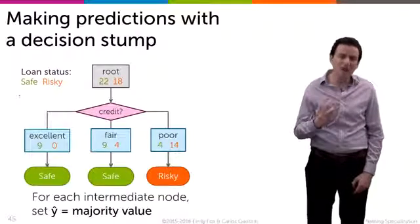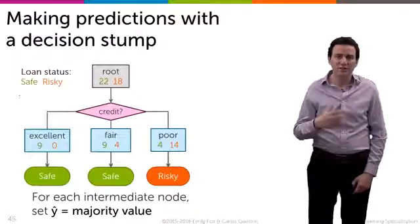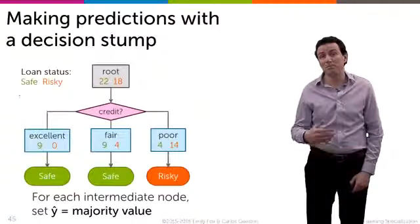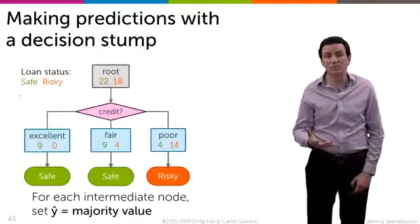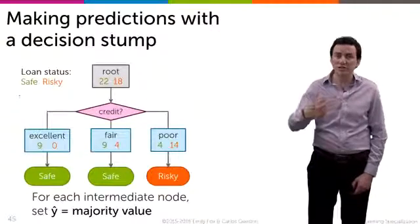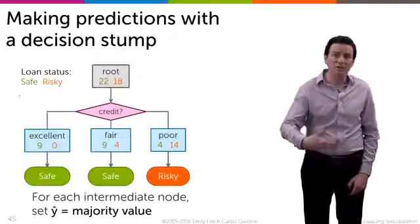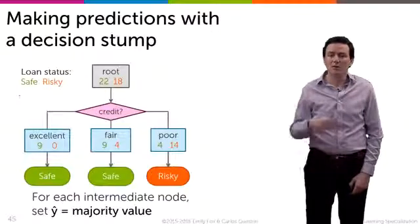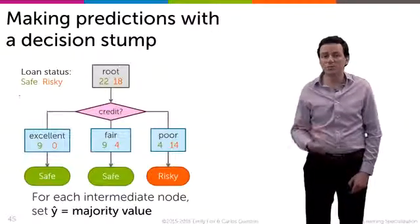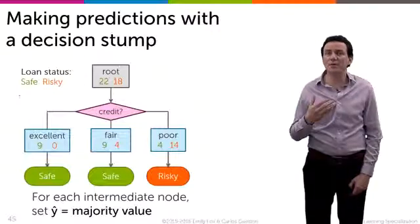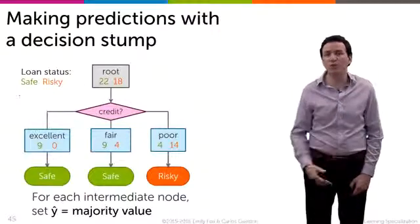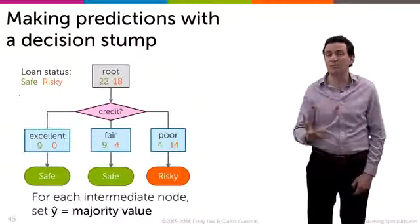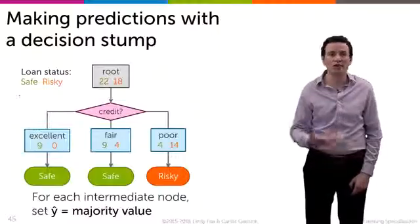And you've now learned your first decision stump — it's a pretty simple one. But to get better predictions and more accuracy, we're going to explore that more and split further. But before we split further, we're going to discuss why we picked credit to do the first split, as opposed to, for example, the term of the loan or income.